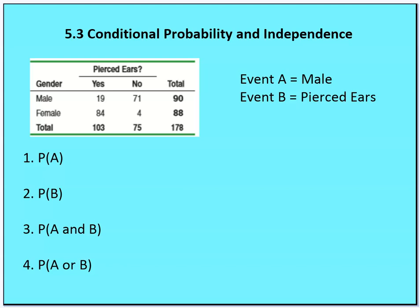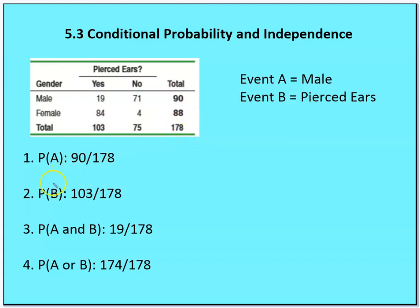The probability of A is 90 males out of 178 total. The probability of B — someone has pierced ears — is 103 out of 178. The probability of A and B — a male with pierced ears — is 19 out of 178. The probability of A or B is 174 out of 178, since only four subjects — females without pierced ears — don't meet that criteria.